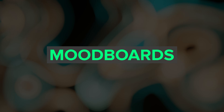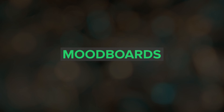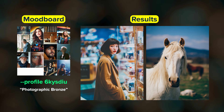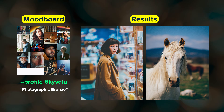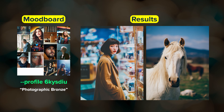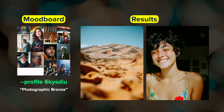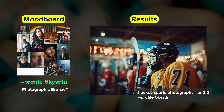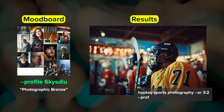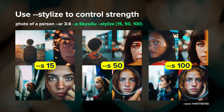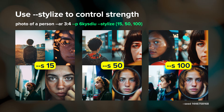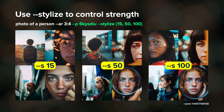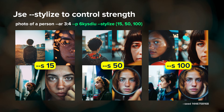This sref system update should also improve your mood board results. Mood boards use the profile parameter --p. To control the strength of a mood board you'll want to use the stylize parameter. The default value is 100 and you can use any value from 0 to 1000. Stylize can also be used to control the strength of a personalization profile as well as the default Midjourney style.